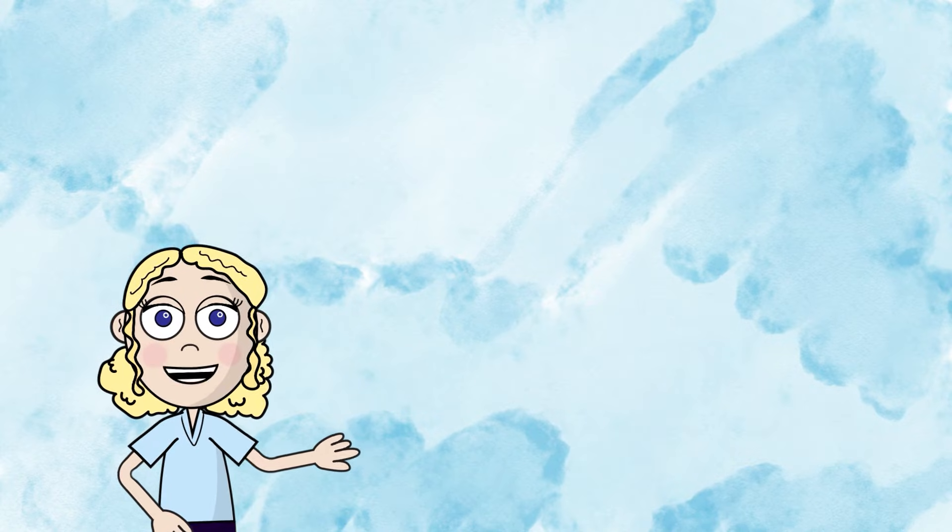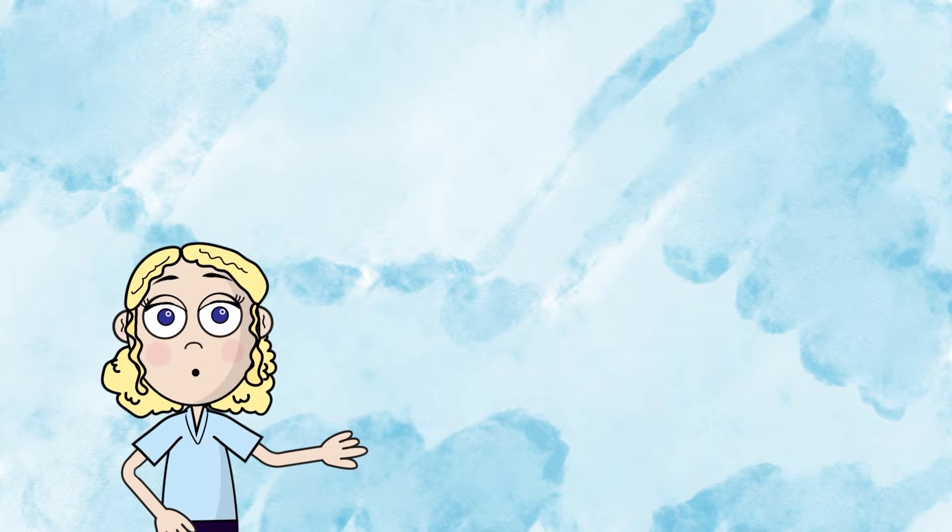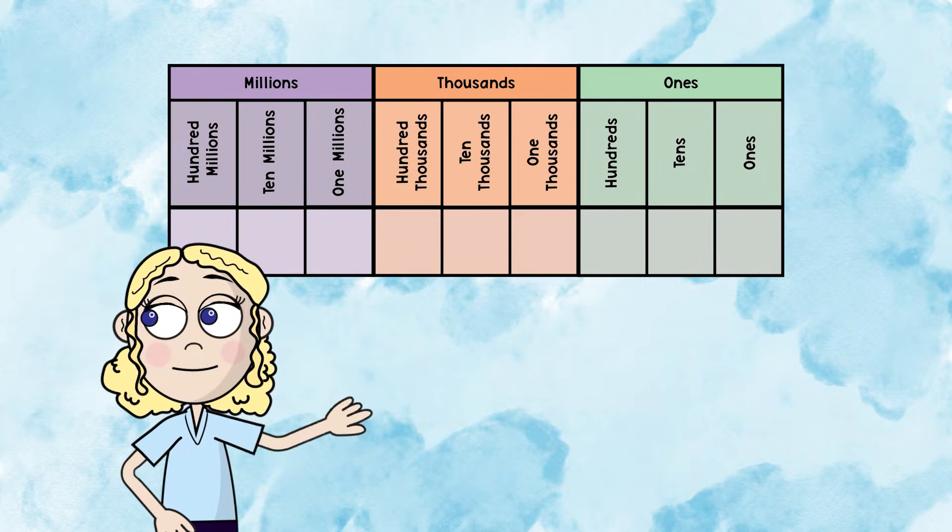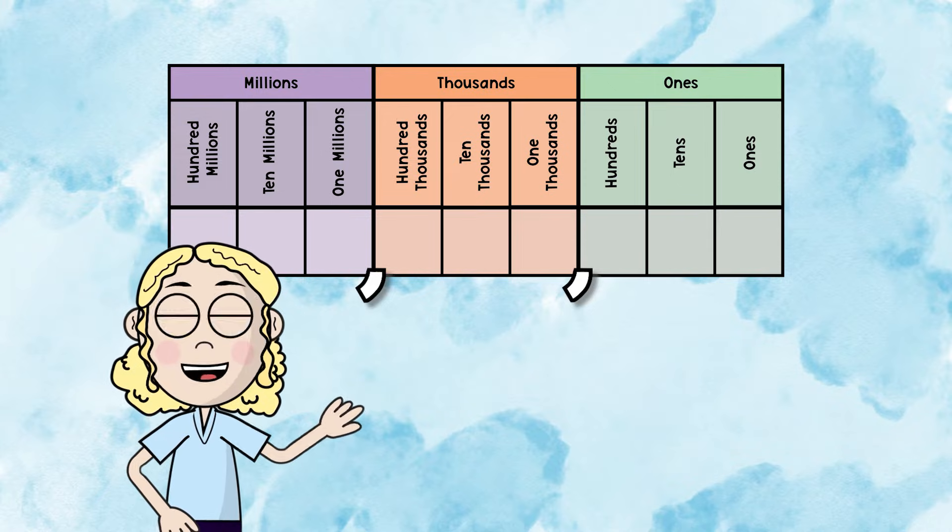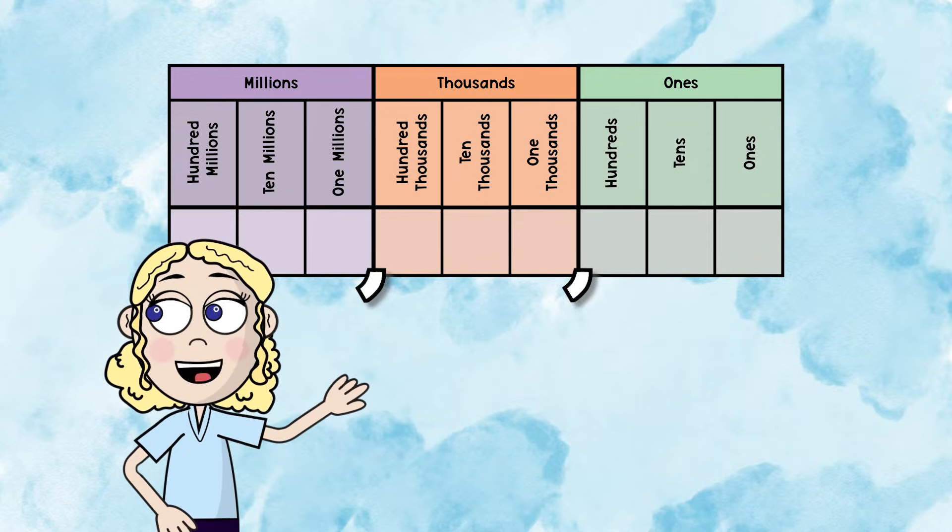Alright, so how do we write numbers in word form? What we can do is actually look at a place value chart. The commas will give us clues about what to write. Let's look at this place value chart right here.